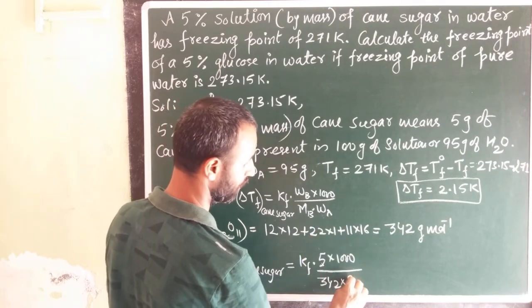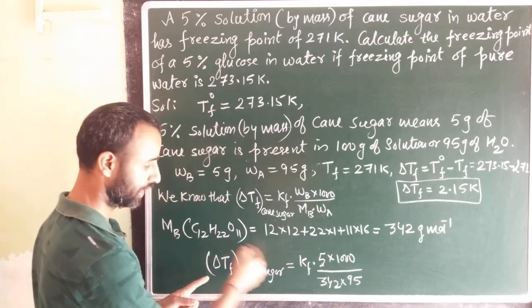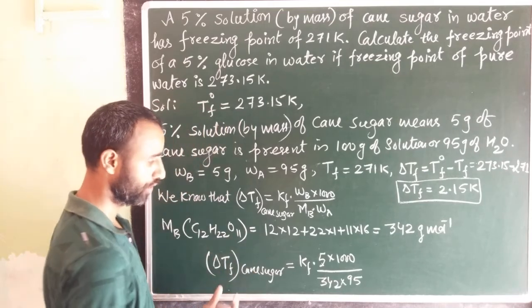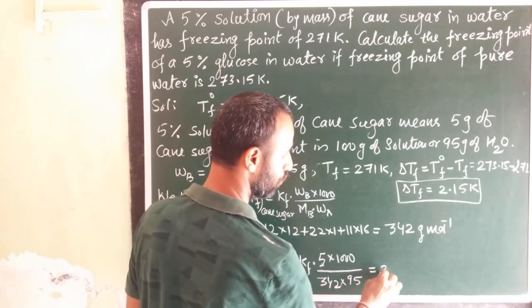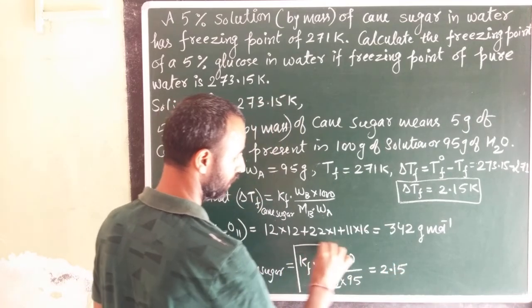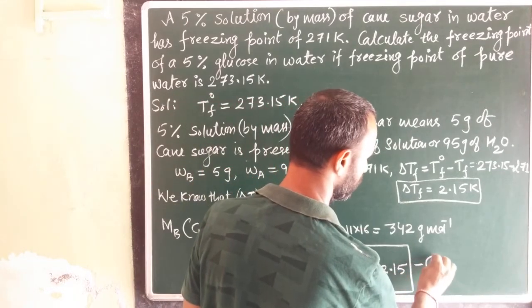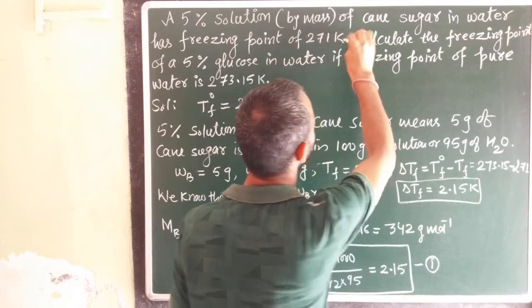What is WA? 95. And this delta Tf, the value is 2.15. So this is equation number 1 from the statement.